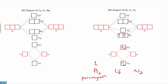Moving on to C2: carbon has four valence electrons per atom, so C2 would have a total of eight valence electrons in the diatomic. We have to fill in two more electrons. Calculating bond order: six bonding total, minus two antibonding, so six minus two is four, divided by two, gives a bond order of two — analogous to C2 being held together by a double bond. We also see that all of C2's electrons are paired up, so this species would be diamagnetic.